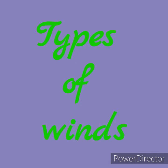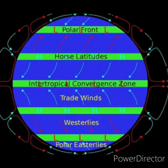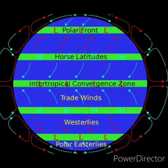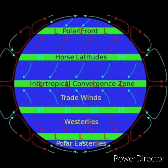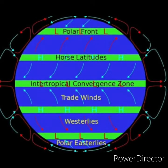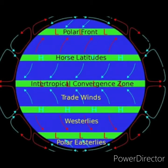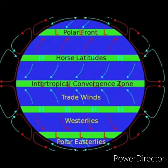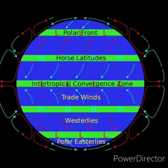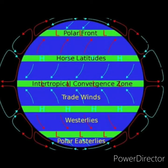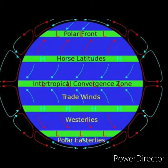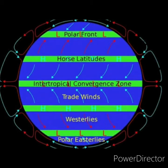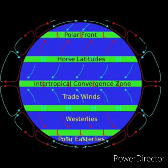The wind system is categorized under three types: planetary winds, seasonal winds, and local winds. Planetary winds are the ones which blow almost in the same direction throughout the year, which is why they are also called permanent winds.